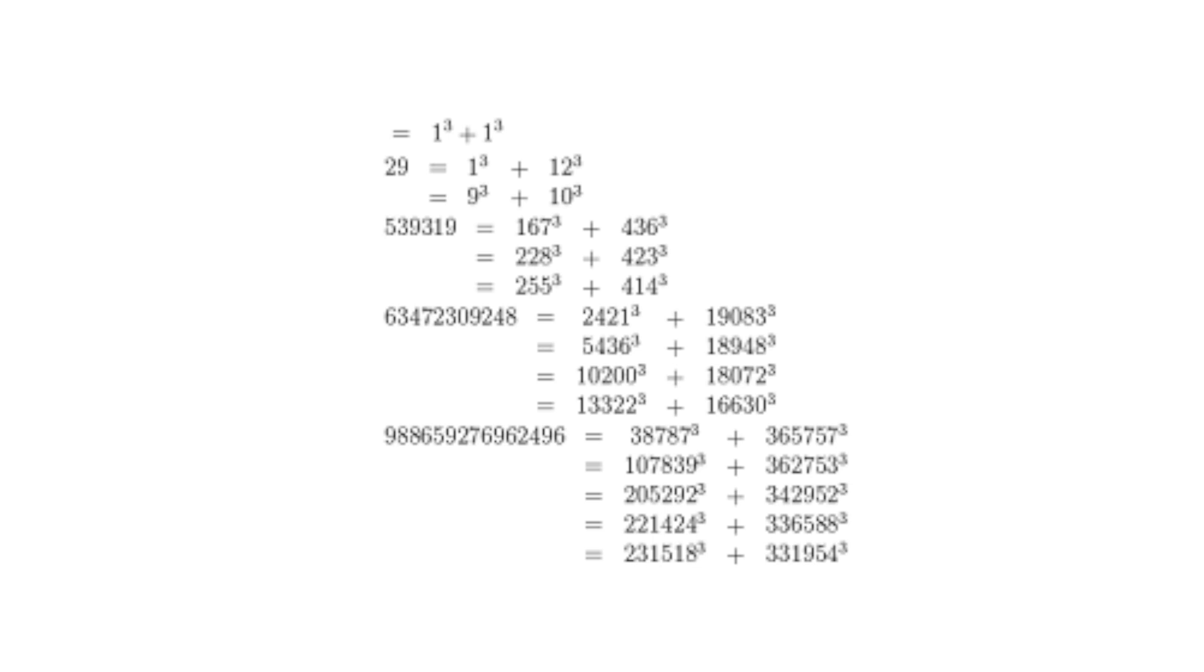1729, of course, is the second taxi cab number, as the smallest number that is the sum of two cubes in two different ways. The third taxi cab number is 87,539,319, which is the sum of three different pairs of cubes. Only six taxicab numbers are known today.